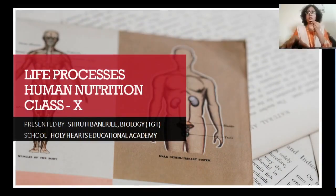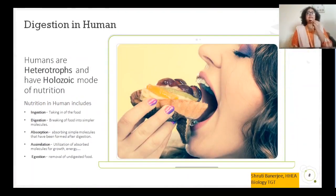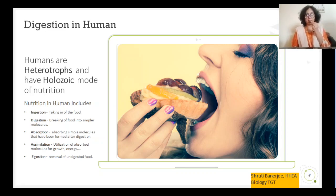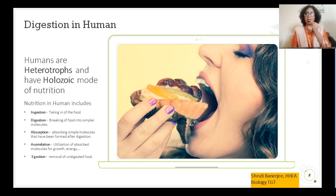So what is human nutrition? Human beings are heterotrophs. Nutrition is of two types: autotrophs and heterotrophs. What are heterotrophs? Heterotrophs are organisms which depend upon other organisms — like other plants and other organisms — for their nutritional source. These heterotrophs are further divided into parasites, saprophytes, and holozoic.